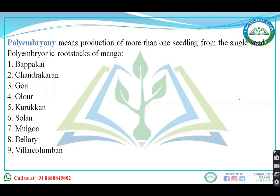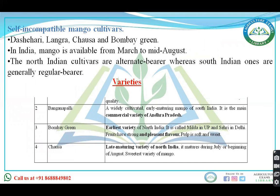Polyembryonic varieties of mango you have to remember: Bappakai, Goa, Olar, Kurukkan, Solan, Mulgoa, Pereli, and Nilesua Dwarf. These are the polyembryonic varieties.